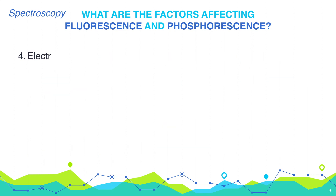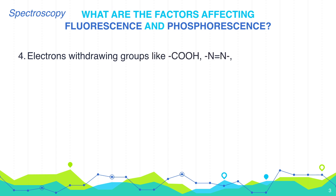Electron-withdrawing groups like COOH, N=N, or NO2 groups and halides decrease fluorescence.